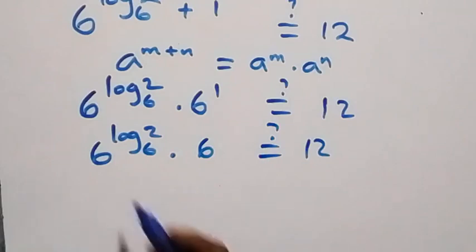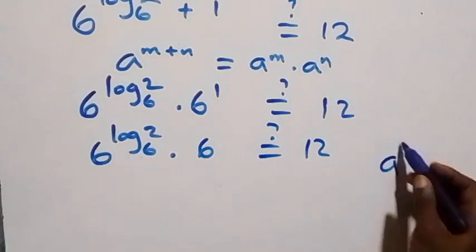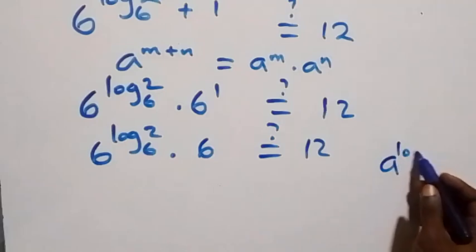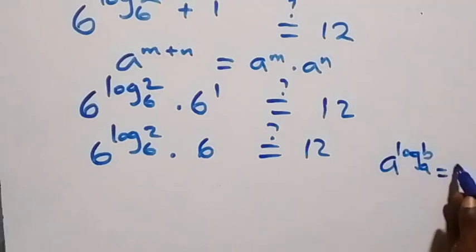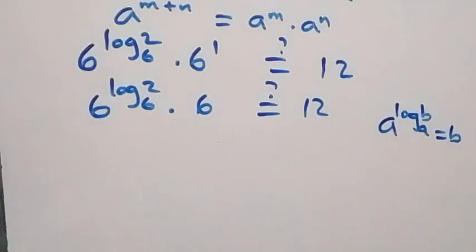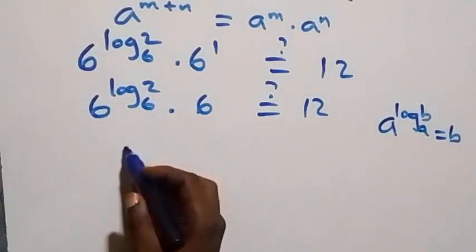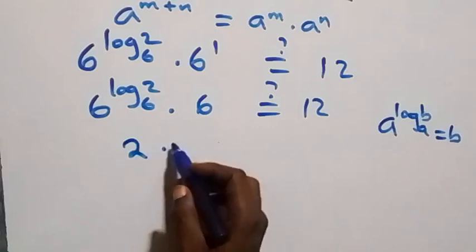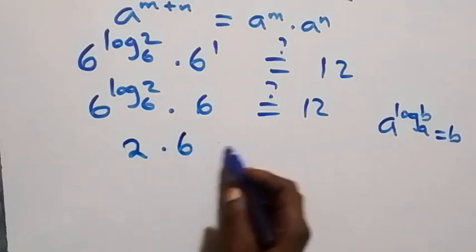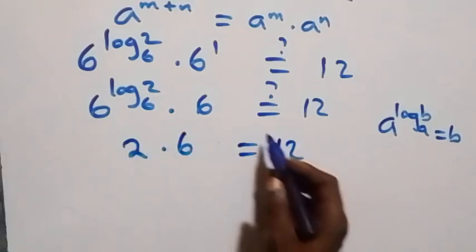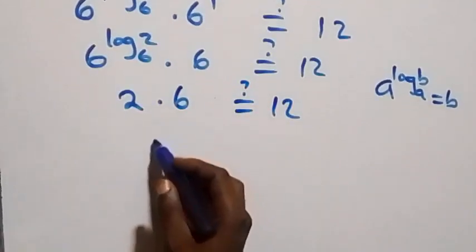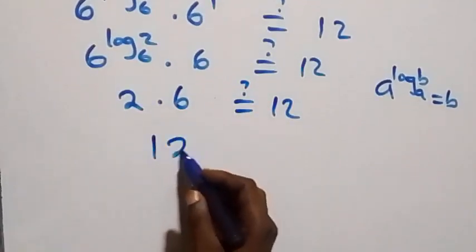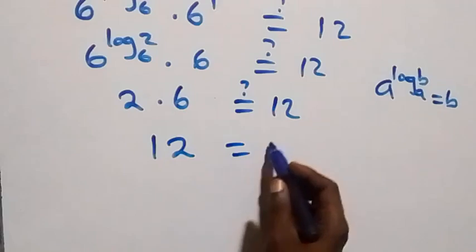Using the identity a raised to power log base a of b equals b, we get 2 times 6 equals 12, which is indeed 12. So left-hand side equals right-hand side.